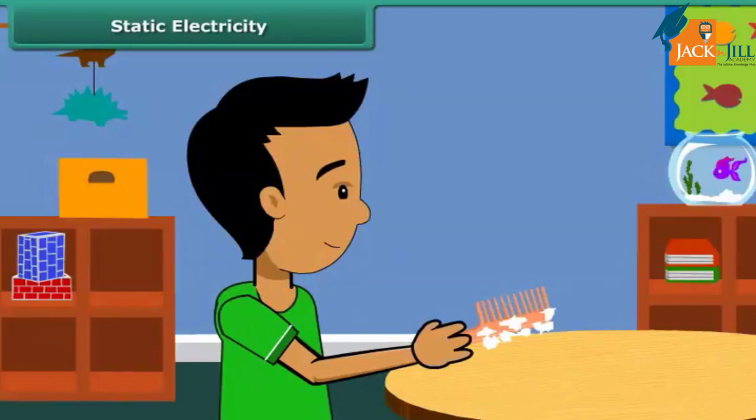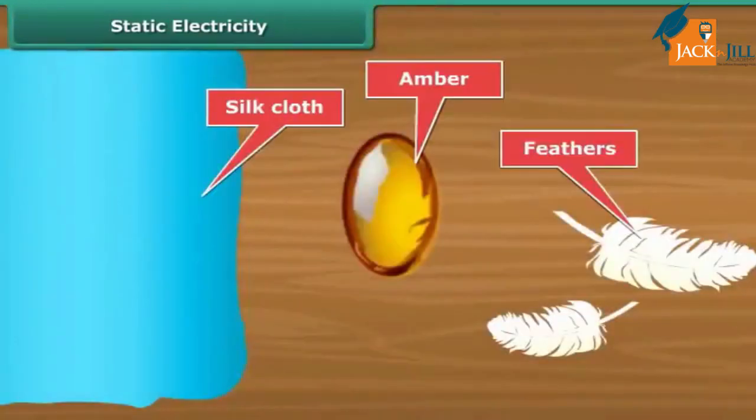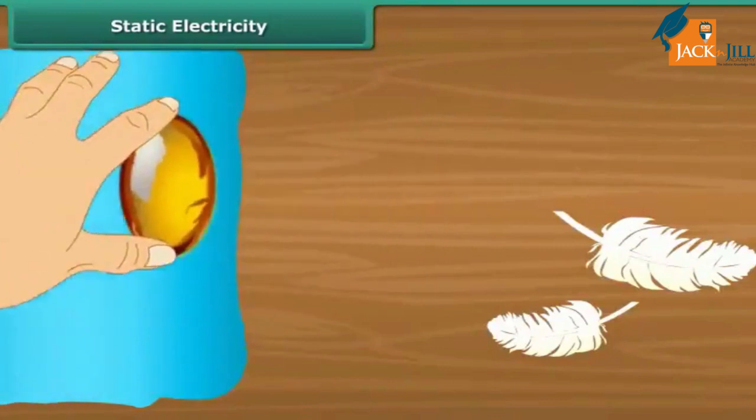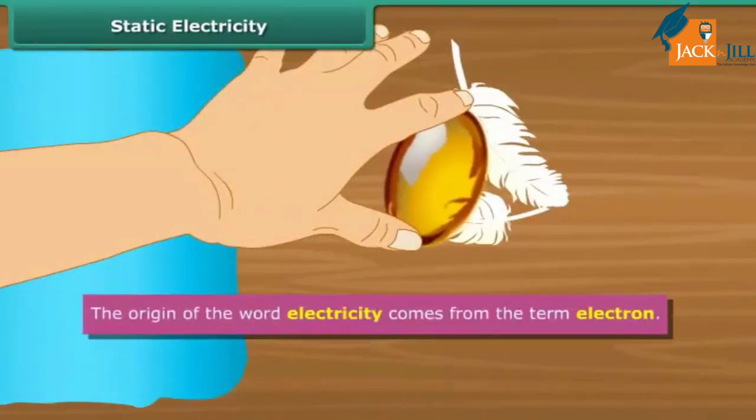This was first noticed by a Greek man named Thales over 2500 years ago. Thales found that amber attracted tiny feathers after it was rubbed with silk cloth. This was due to static electricity. The origin of the word electricity comes from the term electron.